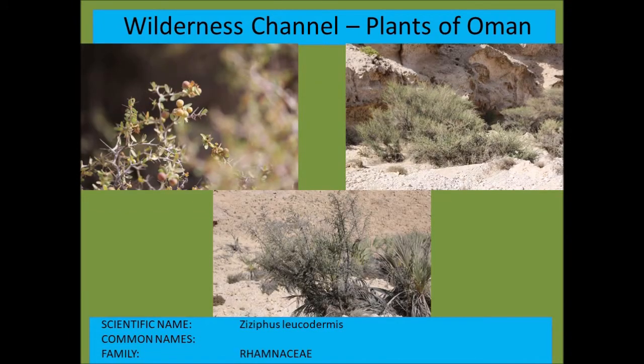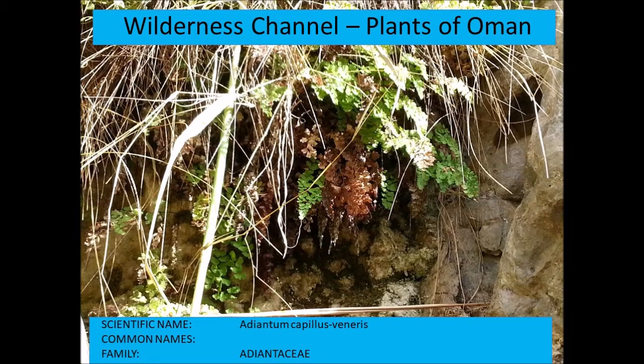Ziziphus leucodermis is one of the indigenous Ziziphus species growing in the desert. The seeds are very hard, the outer flesh of the fruit is somewhat edible, and local people apparently crushed the seed kernels and ate them.